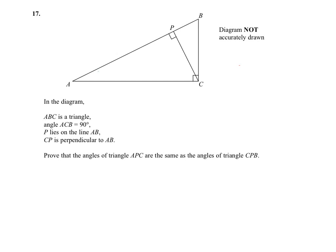We're given some information about two triangles, and we're being asked to prove that the angles of the large triangle APC are the same as the angles in the smaller triangle CPB.